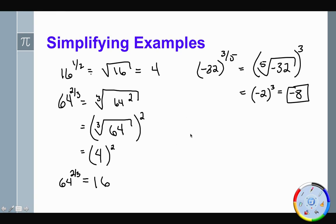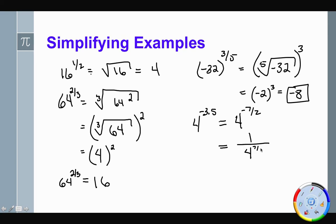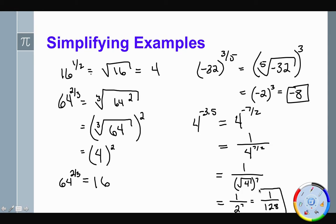Let's look at a decimal example: 4 to the negative 3.5. We have both a decimal and a negative in the same question. We rewrite 3.5 as seven-halves, and because the exponent is negative we find the reciprocal — that's 1 over 4 to the seven-halves. We rewrite this as 1 over the square root of 4 to the seventh power. The square root of 4 is 2, so we get 1 over 2 to the seventh, which is 1 over 128.